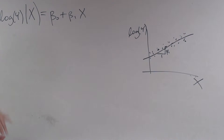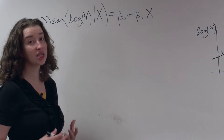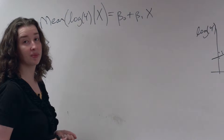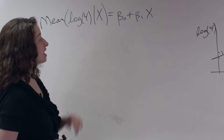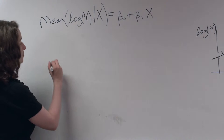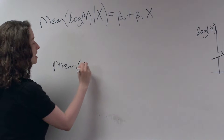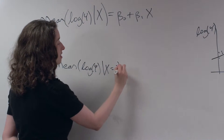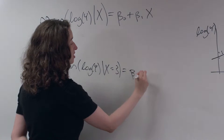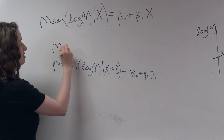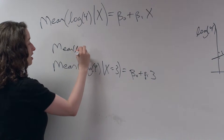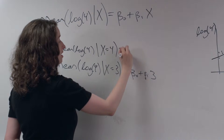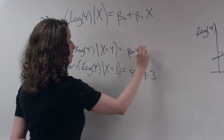However, if you're not comfortable interpreting things on the log scale — as I personally usually am not — the nice thing about the log is we can get back to our original scale. So let's do that in the same way we did before. Let's assume that we're interested in the mean of the log of y given that x is equal to 3, and this model says that's equal to beta 0 plus beta 1 times 3. And we're interested in the mean of the log of y when x is equal to 4, which is beta 0 plus beta 1 times 4.